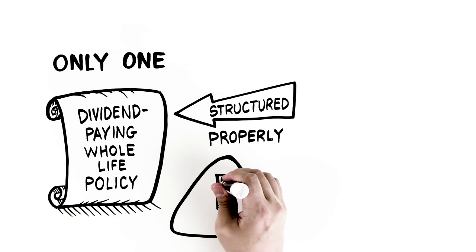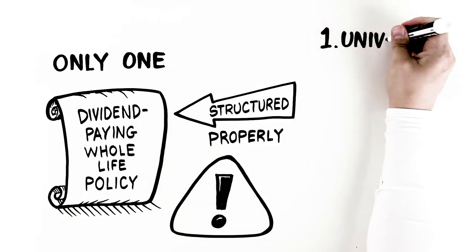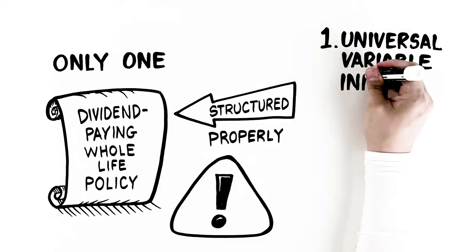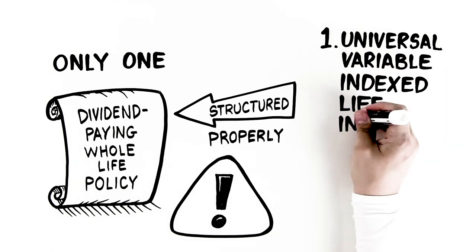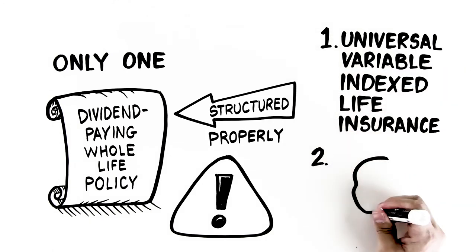Risk comes into play when: 1. You have the wrong permanent life product, such as universal, variable, or indexed life insurance, which is tied to the market, and 2. An uninformed agent.